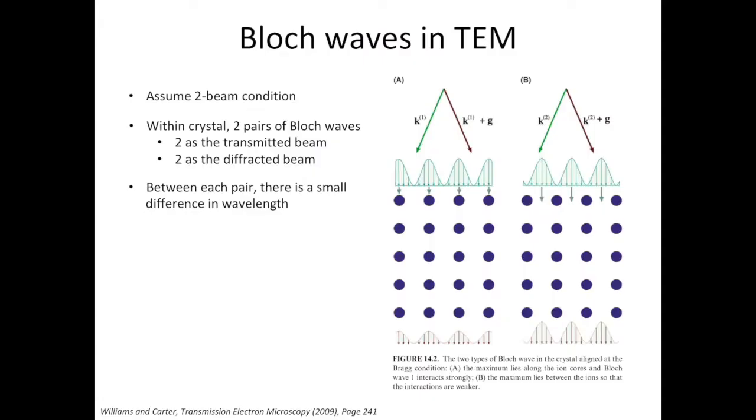Coming back to the previous slide, in the figure on the right, k1 and k1 plus g make the b1 in the previous equation. k2 and k2 plus g make the b2 in the previous equation. Within each pair of the Bloch waves, there is a small wavelength difference. The small difference is caused by the oscillating periodic potential in the crystal lattice. The small difference will lead to the thickness-dependent complementary amplitudes of the transmitted beam and the diffracted beam, which gives rise to the dynamical contrast.